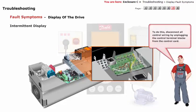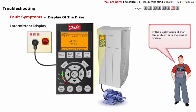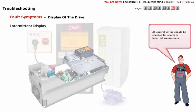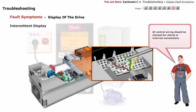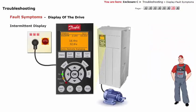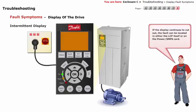The first step is to rule out the problem in the control wiring. To do this, disconnect all control wiring by unplugging the control terminal blocks from the control card. If the display stays lit, then the problem is in the control wiring, and all control wiring should be checked for shorts or incorrect connections. If the display continues to cut out, the fault can be located in either the LCP itself or on the power or SMPS.